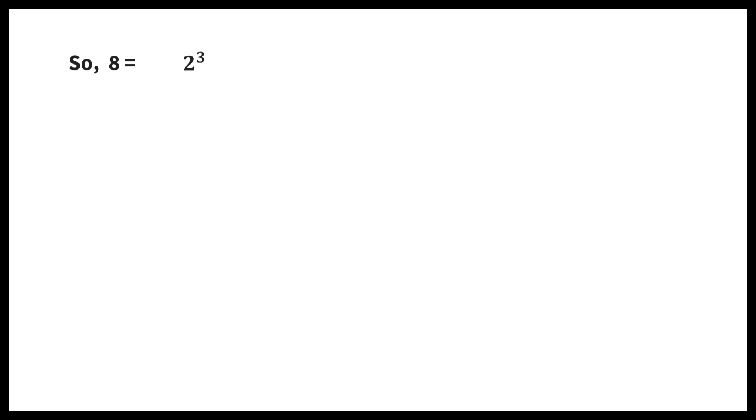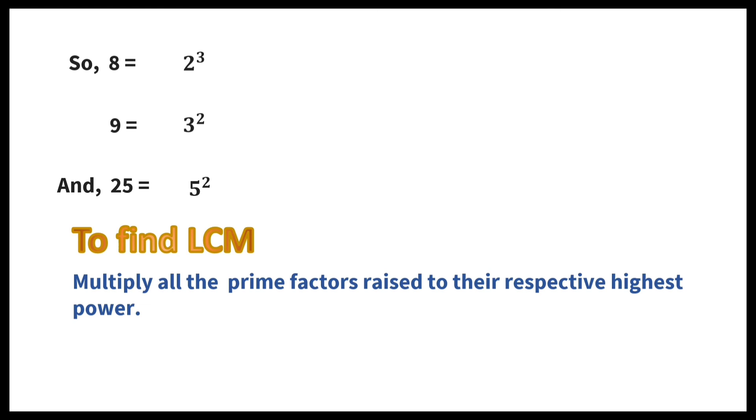So, 8 is equal to 2 cubed. 9 is equal to 3 squared. And, 25 is equal to 5 squared. To get LCM, multiply all the prime factors raised to their respective highest power. So, LCM is equal to 2 cubed times 3 squared times 5 squared. You have to multiply all the numbers: 8 times 9 times 25, which is equal to 1,800.